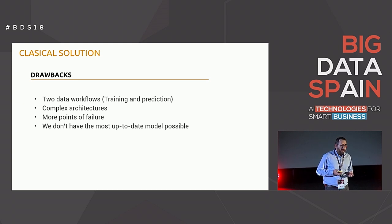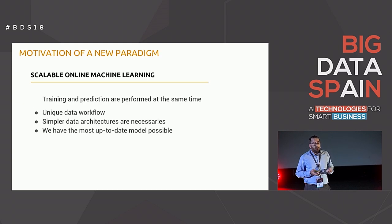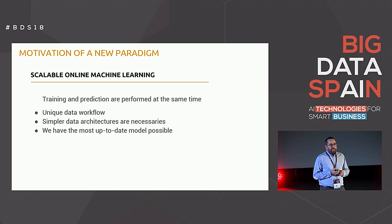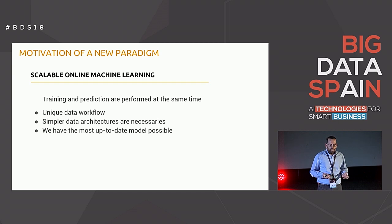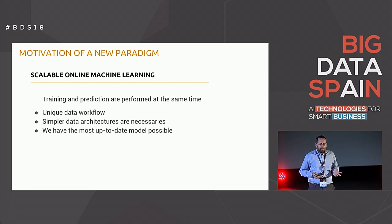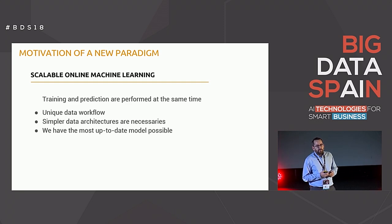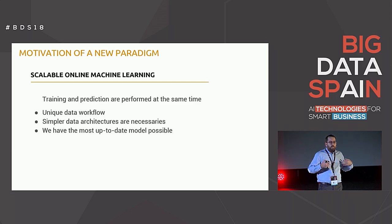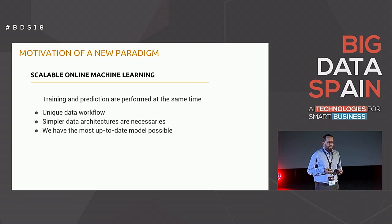How can we solve it? What is the idea of scalable online machine learning? The idea is to train and predict at the same time, within the same data workflow. In this way, we have a unique data workflow with fewer points of failure. The data architecture we propose is simpler, and most importantly, we have the most up-to-date model possible on each occasion — the best model, fully adapted to changes in data trends.